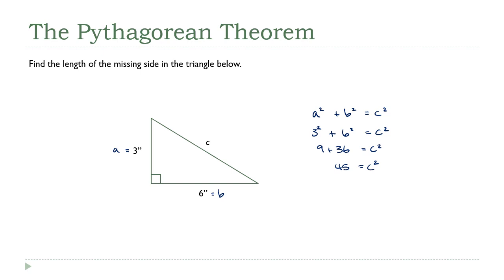Now, to get rid of that exponent on c, we take the square root of both sides. The square root of c squared is just c, and the right side is the square root of 45. We're not quite done — we still need to simplify. Remembering how to simplify square roots: this is the square root of 9 times 5, and the square root of 9 is 3, so this gives us 3 times the square root of 5.